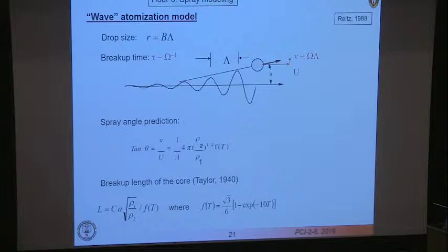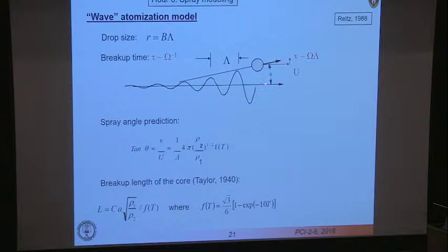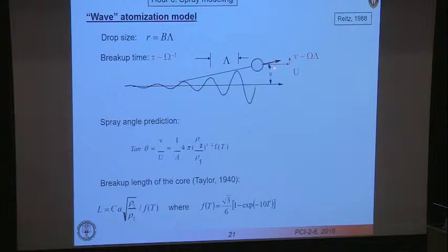How do you use that in the model? A wave grows on the surface of the injected liquid jet due to the unstable configuration. At some point, the wave converts into a droplet — a nonlinear process not handled by the model — but we assume the radius of this droplet is proportional to this wavelength, since that's how much liquid would be in that wave. There's a constant here that needs to be tuned. During wave growth, you have a vertical velocity component along with the jet velocity U, so you can predict the angle at which the droplet is ejected.